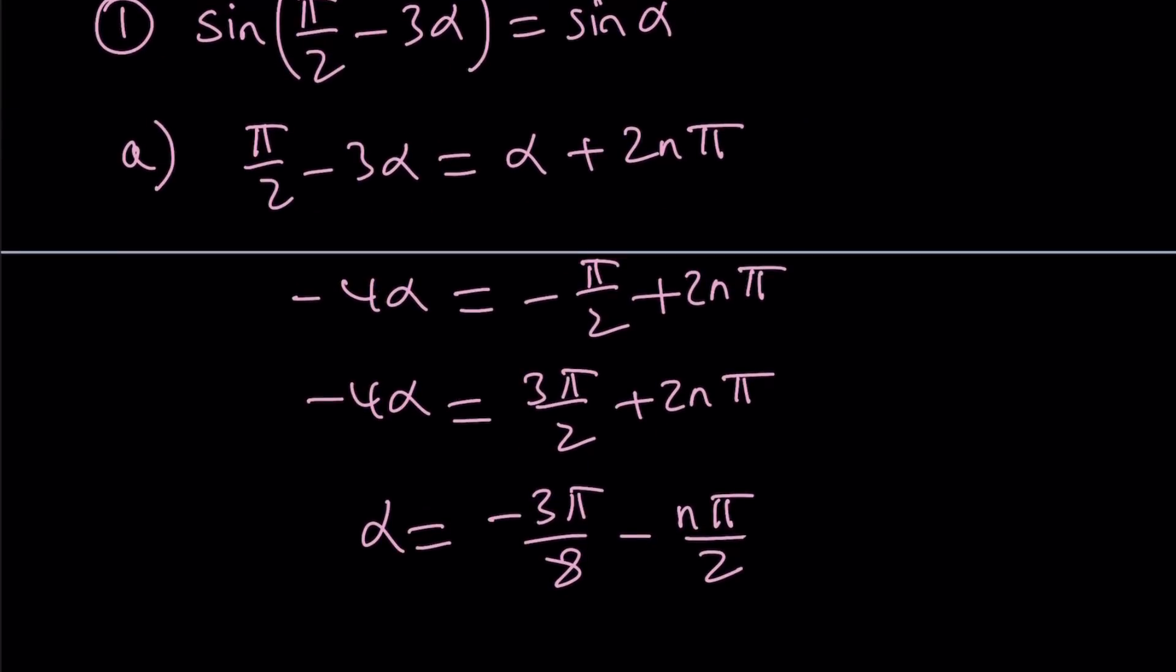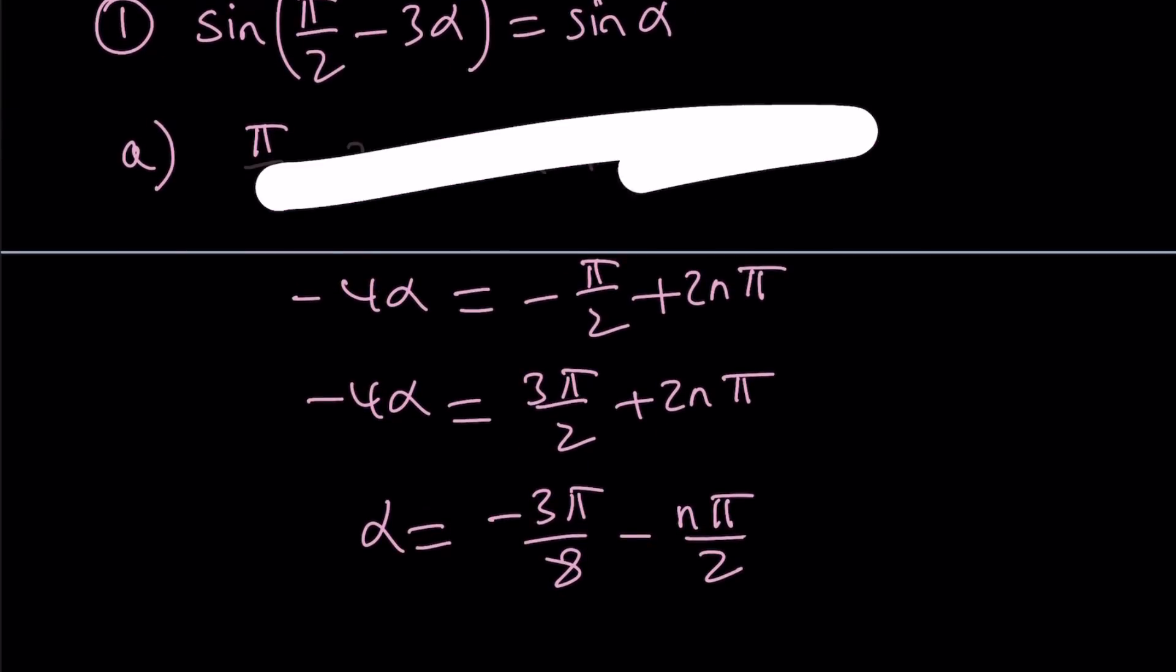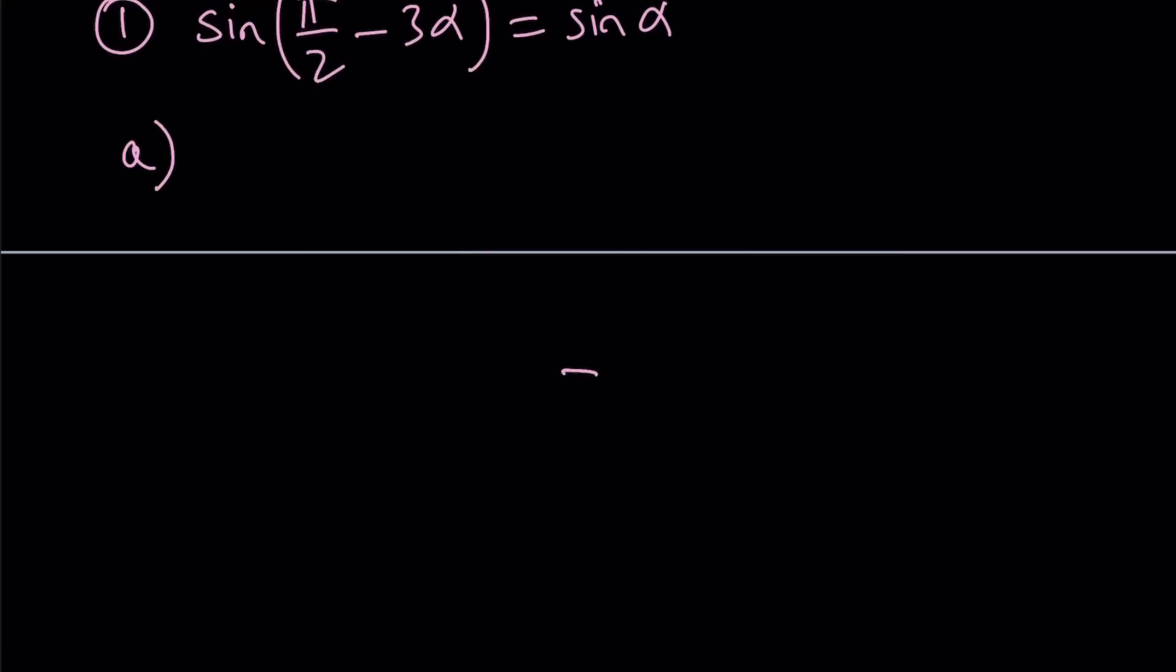You can write the alpha first because that's going to keep things positive. So, we can write it like this, plus 2n pi. And now put the alphas on the same side. You're going to get 4 alpha equals pi over 2 plus 2n pi. By the way, I said